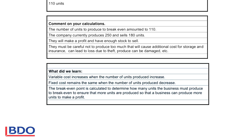So they produce 140 articles more than they have to produce to break even. But the big problem in this business now is that the amount produced is 250 and the number that was sold was 180.